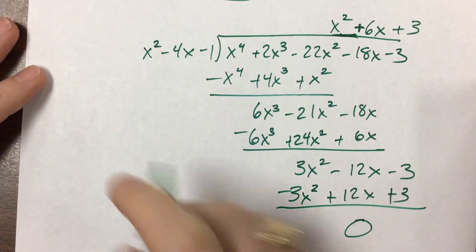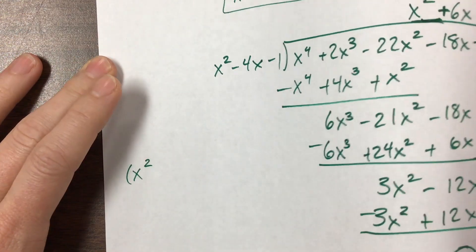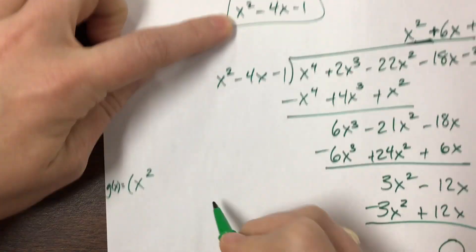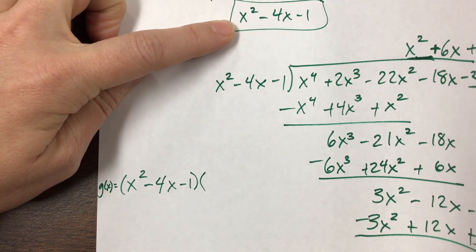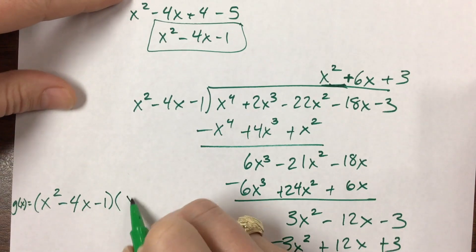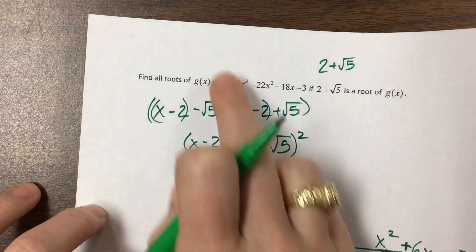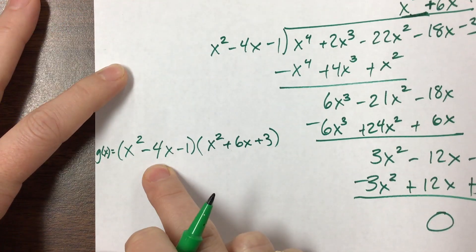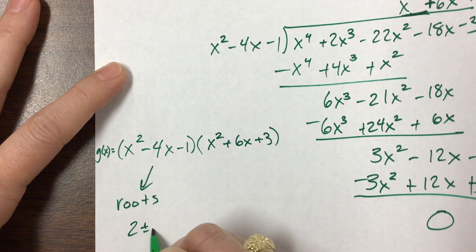So what we have is our g of x equals — the first polynomial we found was x squared minus 4x minus 1, and now we also found x squared plus 6x plus 3. That's how this quartic factors down to two quadratics. This one gave us roots of 2 plus or minus root 5.